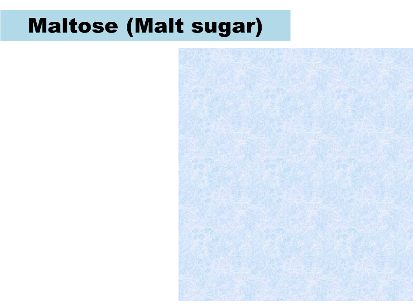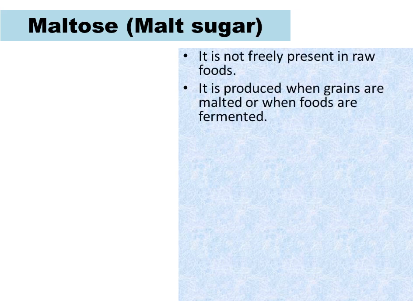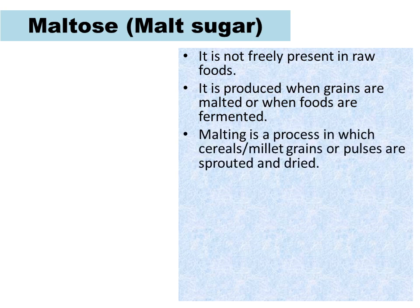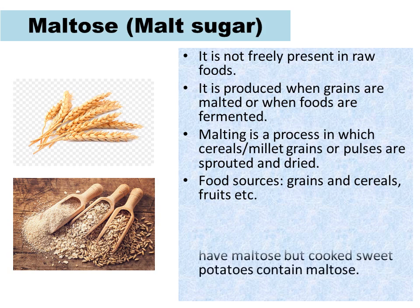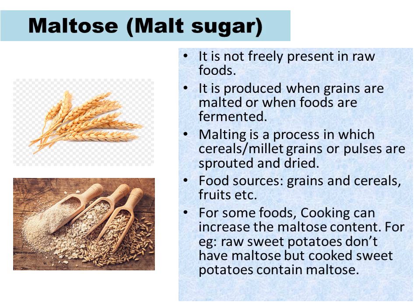Maltose or malt sugar is not present in raw foods. Rather, it is produced when grains are malted or when foods are fermented. Malting is the process in which cereal grains or pulses are sprouted and dried. Maltose is easily digestible. The major sources are grains and cereals, fruits, etc. Raw sweet potatoes don't have any maltose, but cooked sweet potatoes contain maltose. That means for some foods, cooking can increase the maltose content.